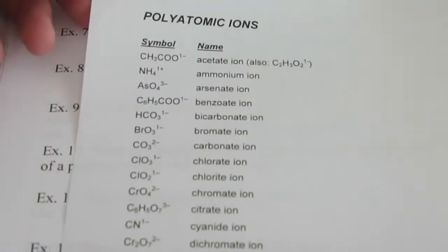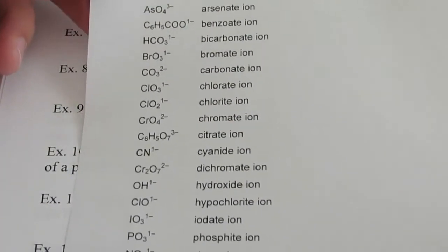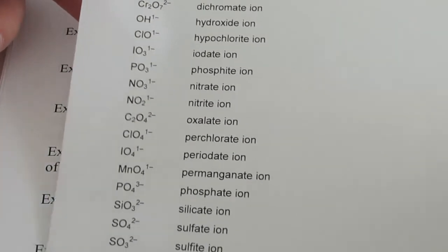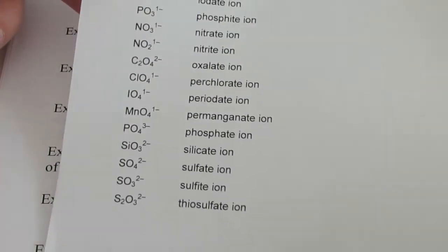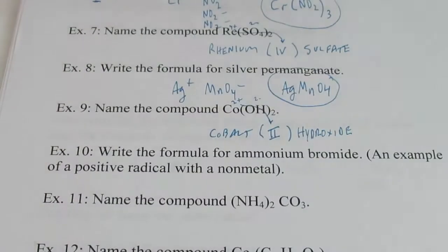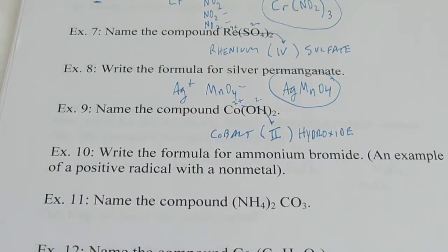Polyatomic ions — there's a list on the back of your periodic table identical to this, and you don't need to memorize this list, but you need to know how to access it and how to use it. Alright, let's continue on then.